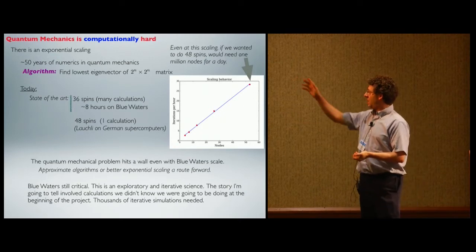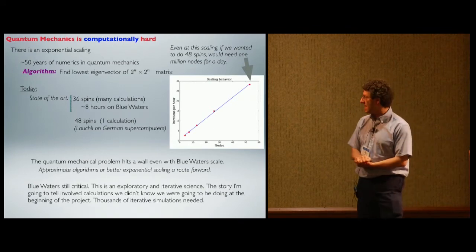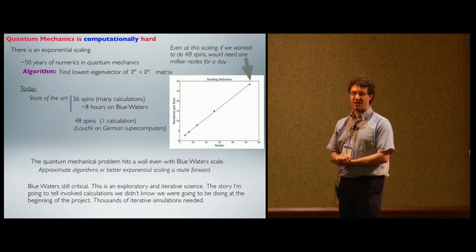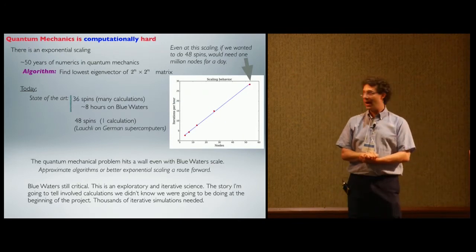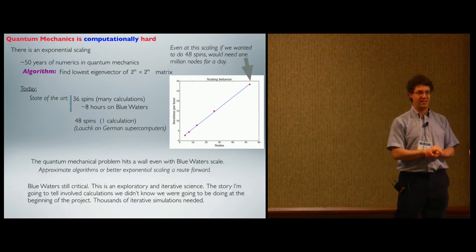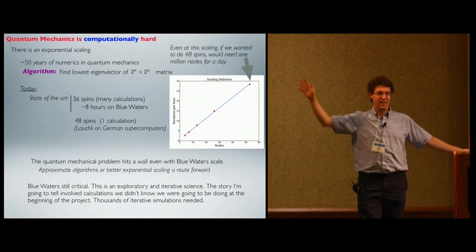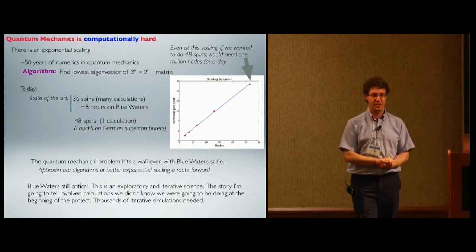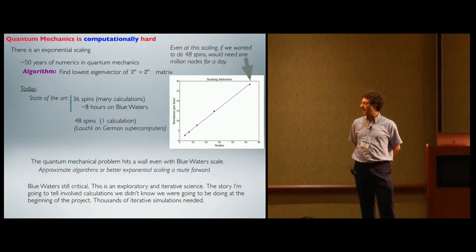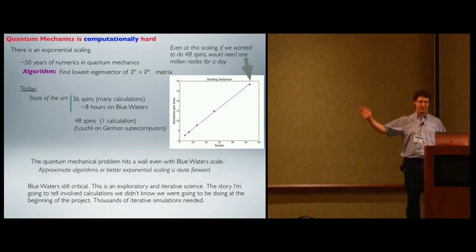That might look like pretty good scaling, but the next useful system size is 48 spins. Because it doubles every spin, for 48 spins a single calculation would require a million nodes for a day. You'd need a thousand calculations to do any useful physics. Andreas Läuchli ran 48 spins once on German supercomputers as a state-of-the-art result, but it's hard to get useful physics from a single calculation. So our practical limit really is 36 spins — not thousands or millions of electrons, just 36.